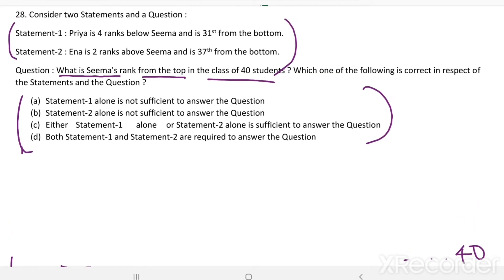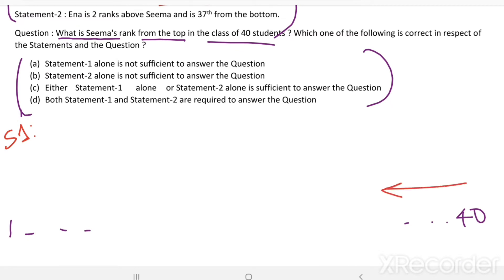There are 40 students in a class. See the first statement. Statement 1: Priya is 4 ranks below SEMA and 31st from the bottom. Priya is 31st from the bottom. That means from this side her rank is 31st. There are total 40 students. From bottom her rank is 31. Then from the top in front of her there are 9 students.